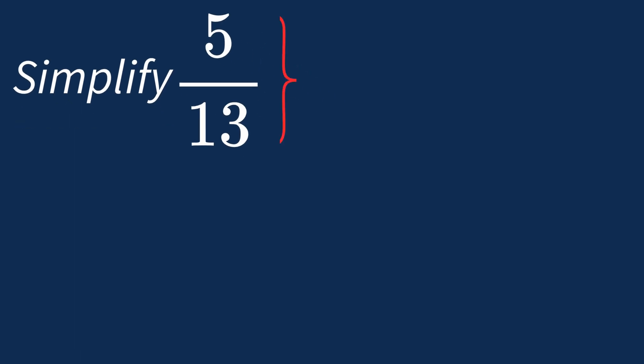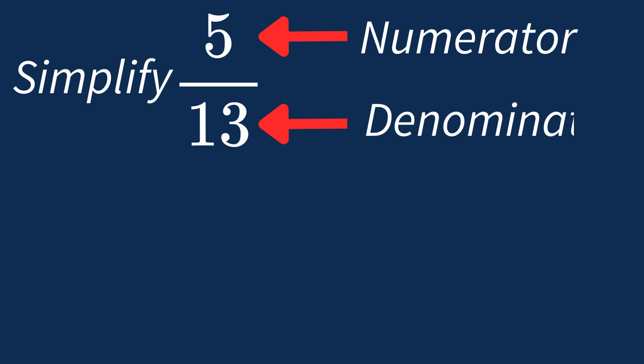When simplifying a fraction like 5 over 13, the first step is to check if there's a common factor between the top number, the numerator, and the bottom number, the denominator.